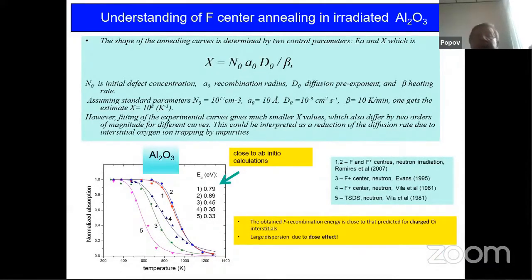So if we compare similar F center annealing curves for alumina, we can see that for different irradiation with different neutron fluxes and fluences, activation energy could be changed from 0.3 eV, for example, to 0.8 eV. So there is a large dispersion of the data, and this is certainly due to the fluence effects, because checking this literature data presented here, we know that for the last case, the fluence was the largest.